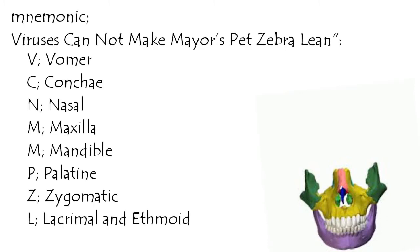Each first letter stands for a facial bone. V — Vomer. C — Conchi. N — Nasal. M — Maxilla. M — Mandible. P — Palatine. Z — Zygomatic. L — Lacrimal. And Ethmoid.